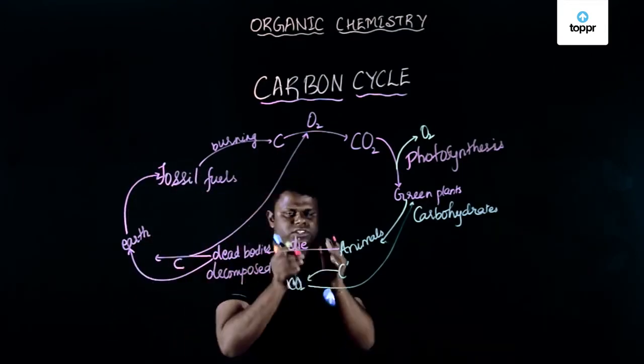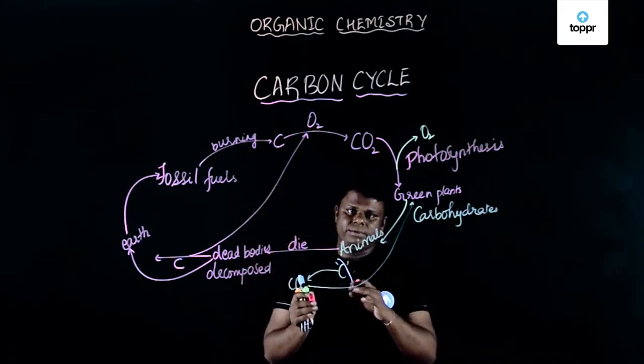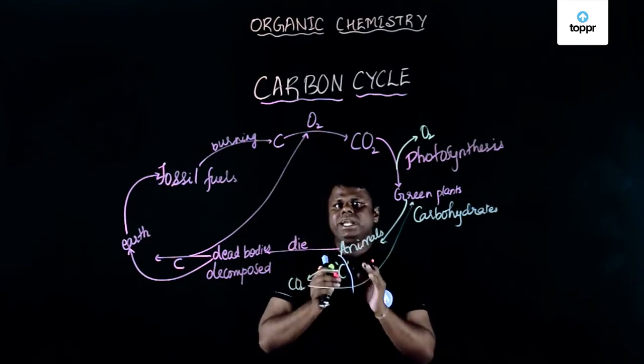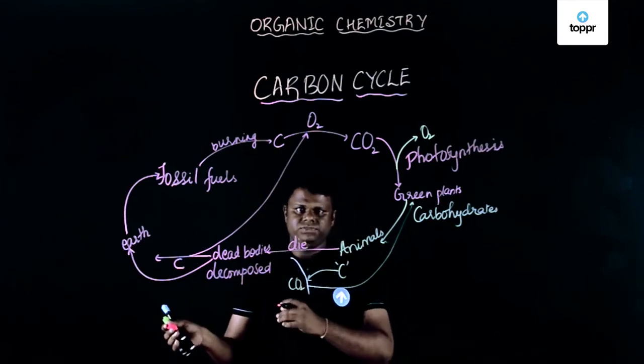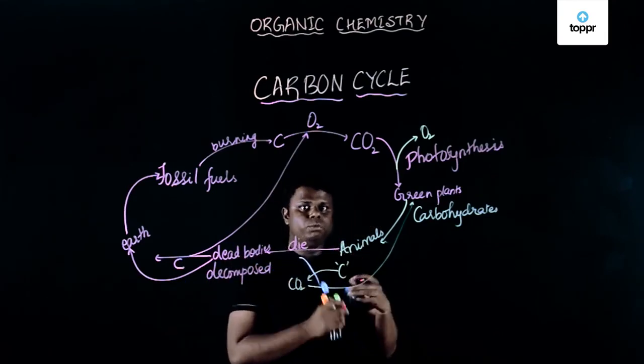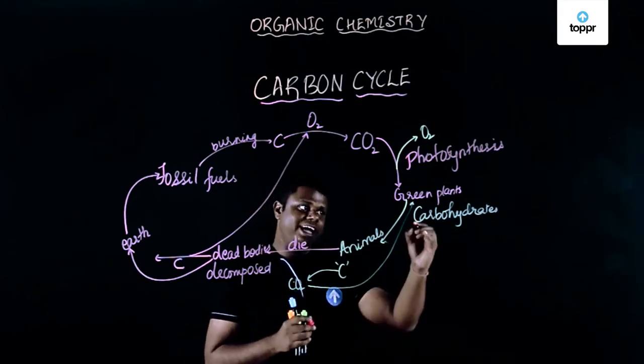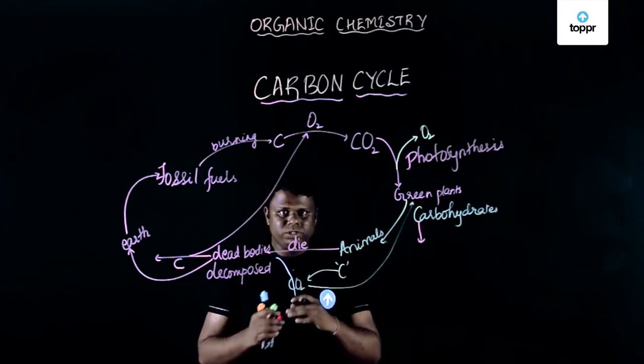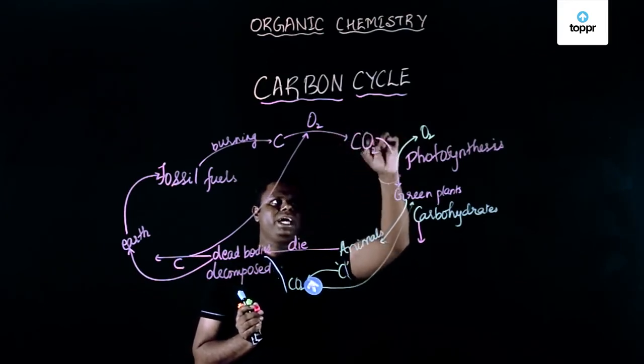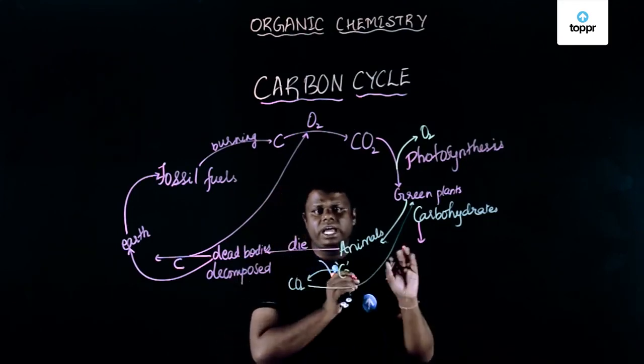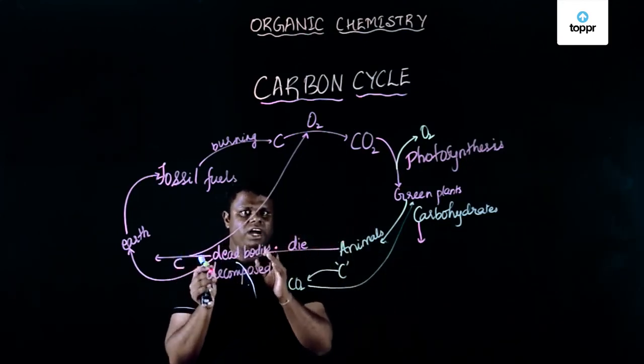You might be understanding why a typical branch of chemistry called carbon chemistry, which is organic chemistry, has originated. Carbon has a very important role to play in day-to-day life starting from the different compounds which we study, to the food material which we eat. We normally eat heavily enriched carbohydrates which contain carbon, glucose and everything. In fact, carbon is even existing as carbon dioxide which is the inorganic part of chemistry. This was about the carbon cycle.